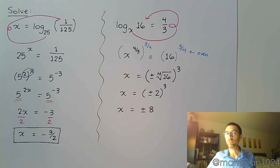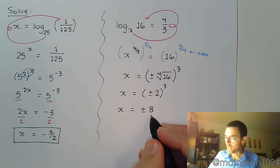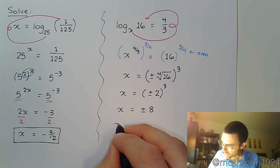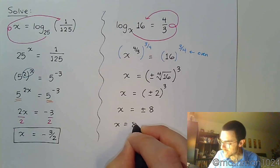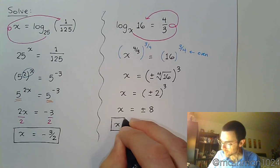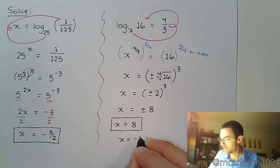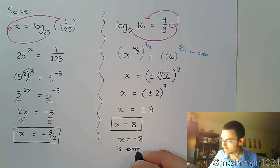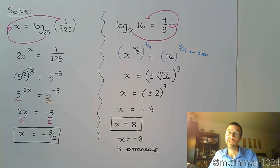We need to remember that when we're talking about exponentials and logarithms, the base has to be positive and not equal to 1. Which means that the negative 8 doesn't work. So the solution here is x equals 8, because x equals negative 8 is extraneous.